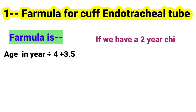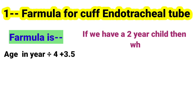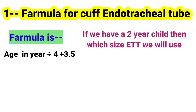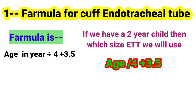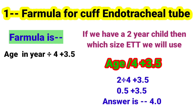Now if we have a 2-year-old child, which size ETT will we use? The formula is age divided by 4 and multiplied by 3.5. We will put the age into this formula: age is 2 years, divided by 4, which equals 0.5, and now we multiply by 3.5.